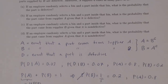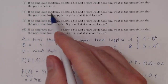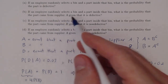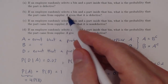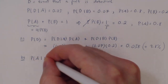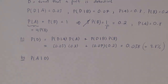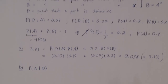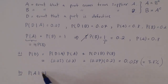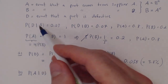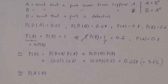Part B: if an employee randomly selects a part, what is the probability that the part came from Supplier A given that it is defective? That's P(A|D). We know P(D|A) and we want to flip the two events to get P(A|D). This looks like a job for Bayes' theorem.